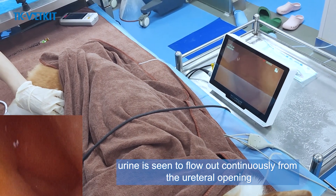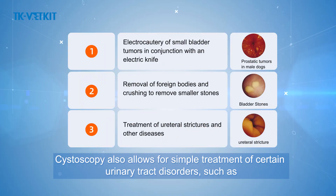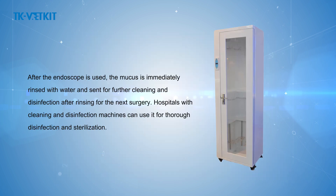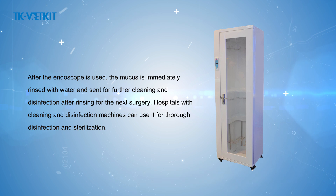Cystoscopy also allows simple treatment of certain urinary tract disorders, such as: electrocautery of small bladder tumors using an electric knife, removal of foreign bodies, crushing to remove smaller stones, and treatment of ureteral strictures and other diseases. After use, the endoscope's mucus is immediately rinsed with water and sent for further cleaning and disinfection.